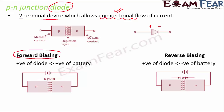When the diode is in forward biasing mode it allows the flow of current. Forward biasing means the positive of the diode (P junction) is connected to the positive of the battery and the negative is connected to the negative. In reverse biasing, the positive of the diode is connected to the negative of the battery and vice versa.